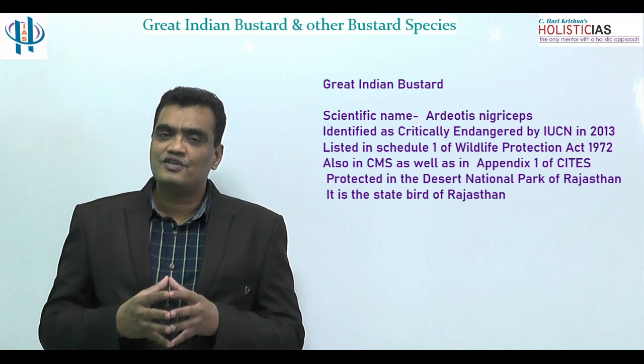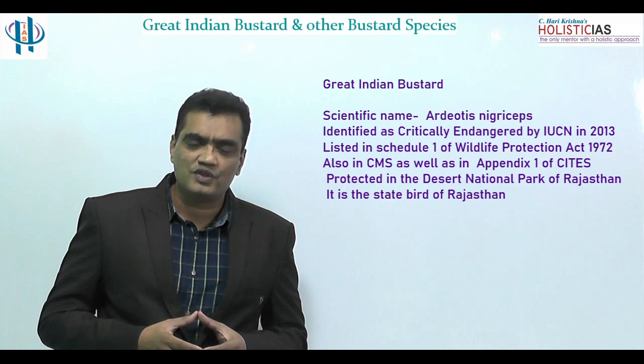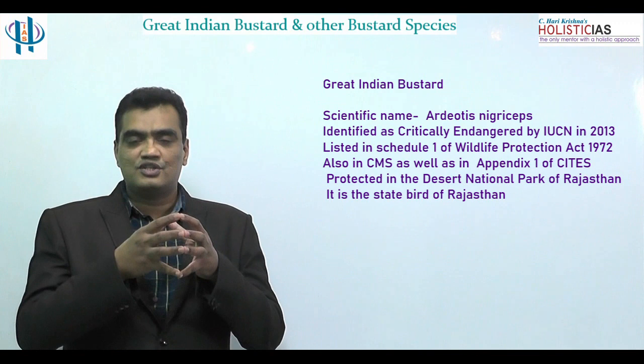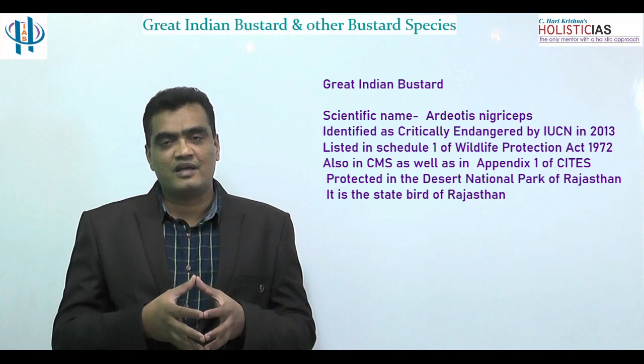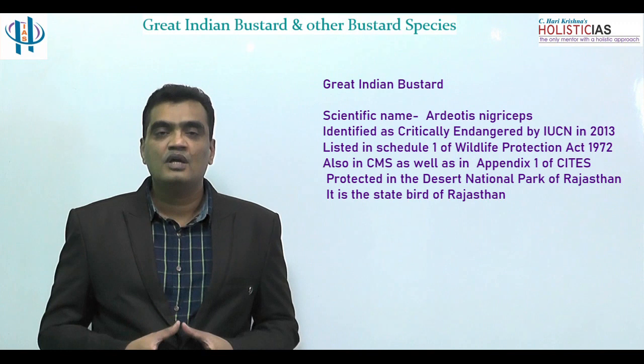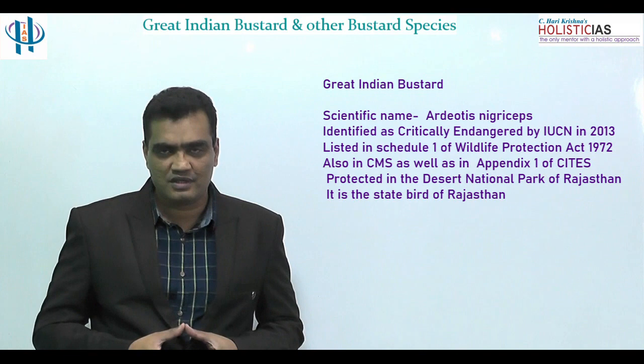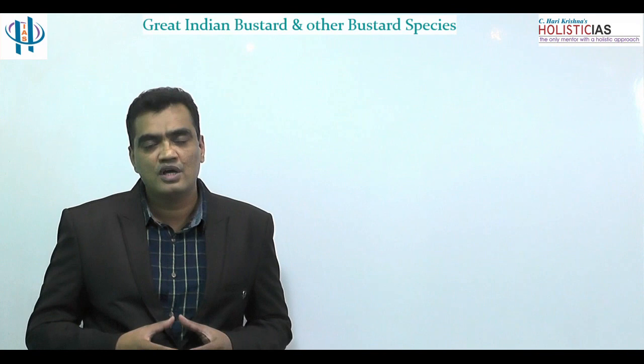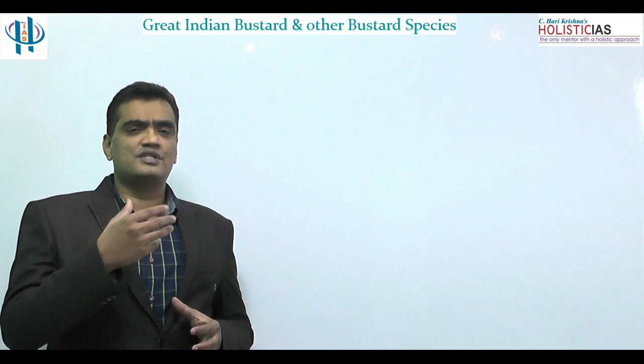Many recovery programs are ongoing for this bird. In 1994, the Great Indian Bustard was identified as endangered in the IUCN list of threatened species. It is also listed in Schedule 1 of the Wildlife Protection Act 1972. The IUCN re-categorized it as critically endangered in its 2013 list. It is also listed under the Convention on the Conservation of Migratory Species and in Appendix 1 of CITES. In 2013, the Rajasthan government launched the Great Indian Bustard Project, and the Desert National Park in Rajasthan is a key protected habitat.